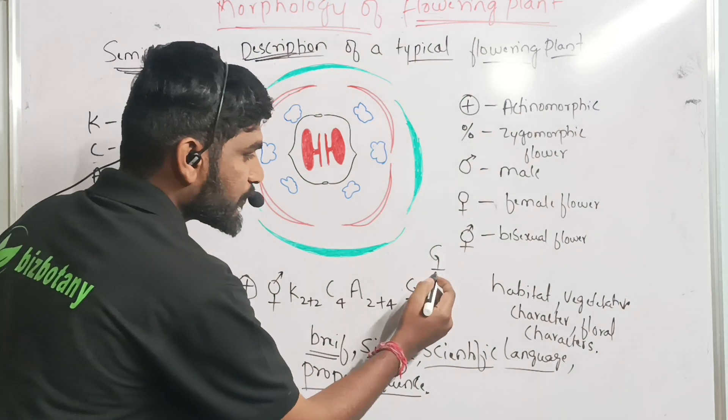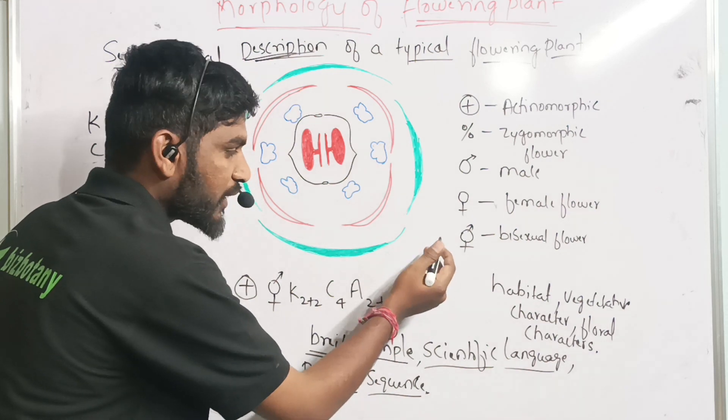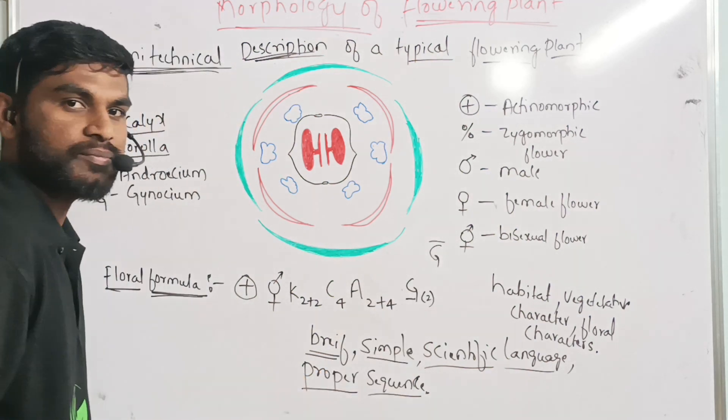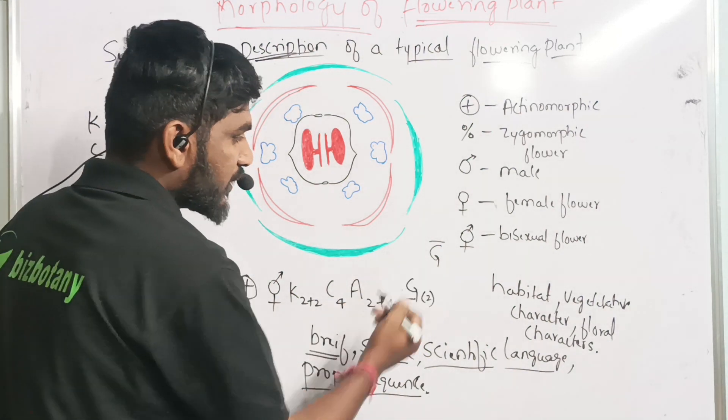When the line is present below portion of the gynoecium, we call it as ovary is superior. When the line is present on the top of the gynoecium or G, we call it as inferior ovary.